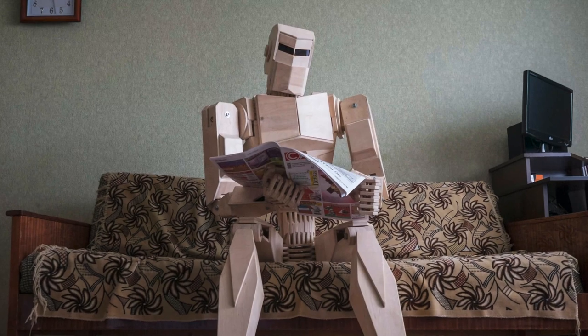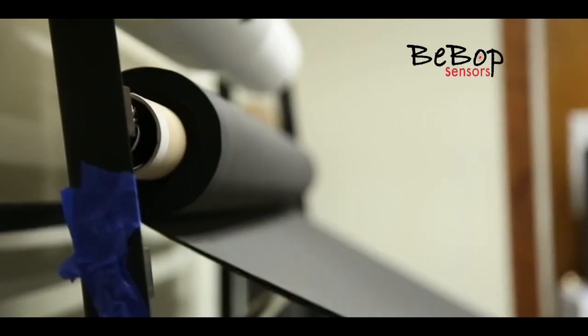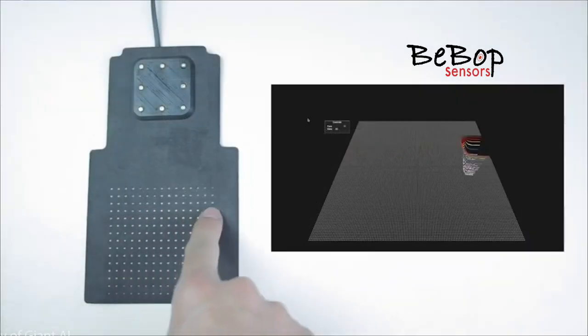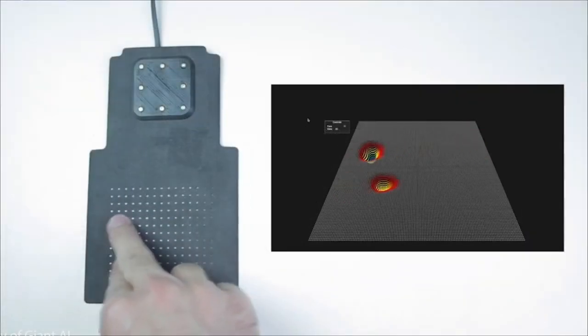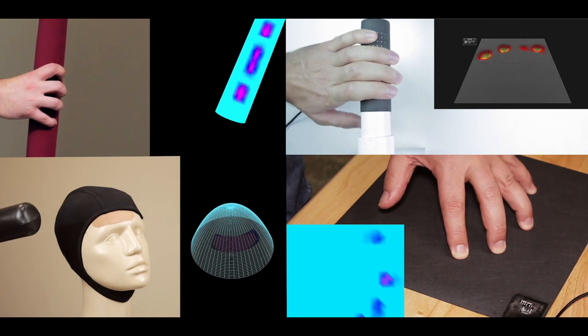Robots will be in our homes, so they must understand the world as we do. Bebop is the world leader in fabric-based sensors, with millions of sensors in daily use. Bebop builds skin-like sensors using smart fabric.